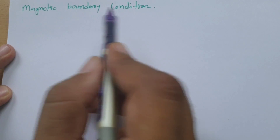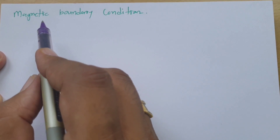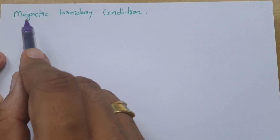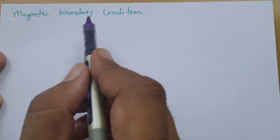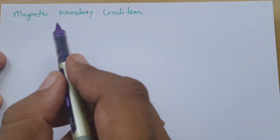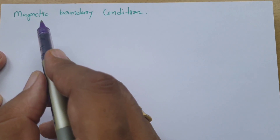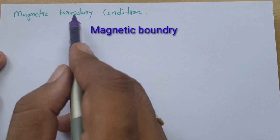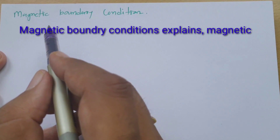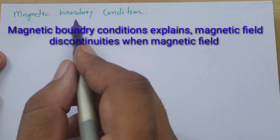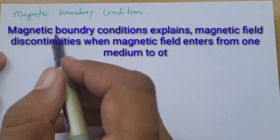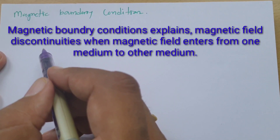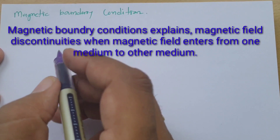So what are magnetic boundary conditions? I have already explained electric boundary conditions, where we saw discontinuity of electric field when it enters from one medium to another. The same concept applies here: magnetic boundary conditions explain how much discontinuity exists in the magnetic field when it enters from one medium to another.